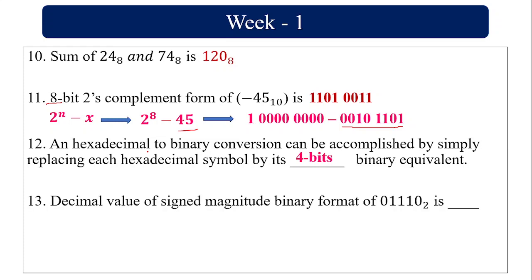The decimal value of a signed magnitude binary format number: the MSB gives the sign bit — 0 means positive, 1 means negative. Here the MSB is 0, so it is positive. The remaining bits 1110 have a decimal value of 14. So the answer is +14.